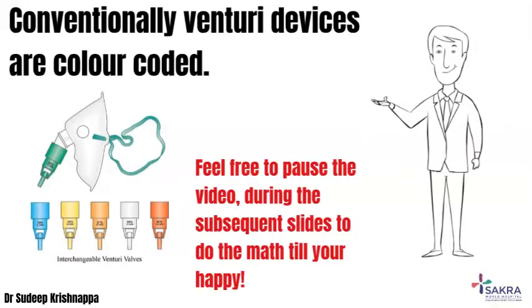Over the next few slides, we will be mathematically analyzing how a particular colored venturi would give a particular FiO2. For simplicity, I have made an assumption that room air would have 20 percent oxygen instead of 21 percent.